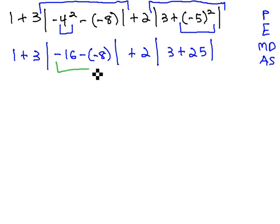Continuing inside those absolute values, we'll do the adding and subtracting. We add the opposite in the first absolute value to get 1 plus 3, absolute value of negative 8, plus 2, absolute value of 28.